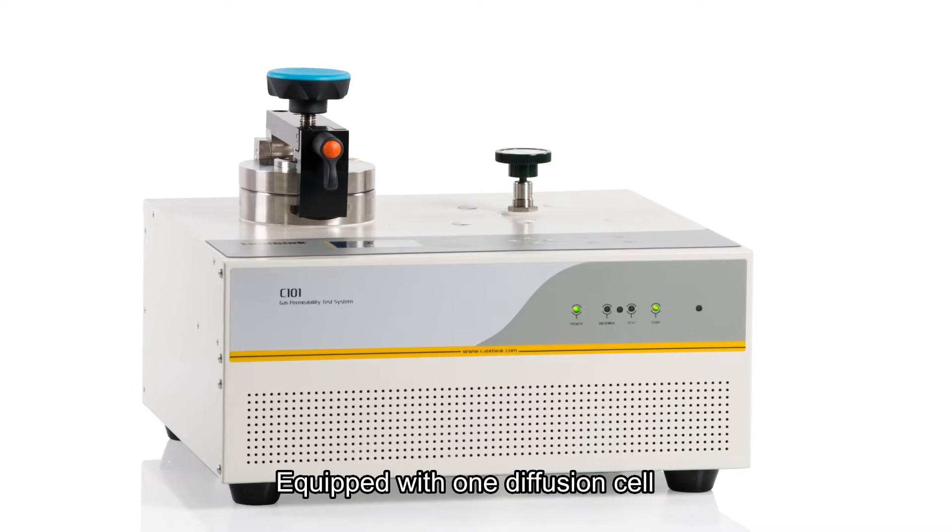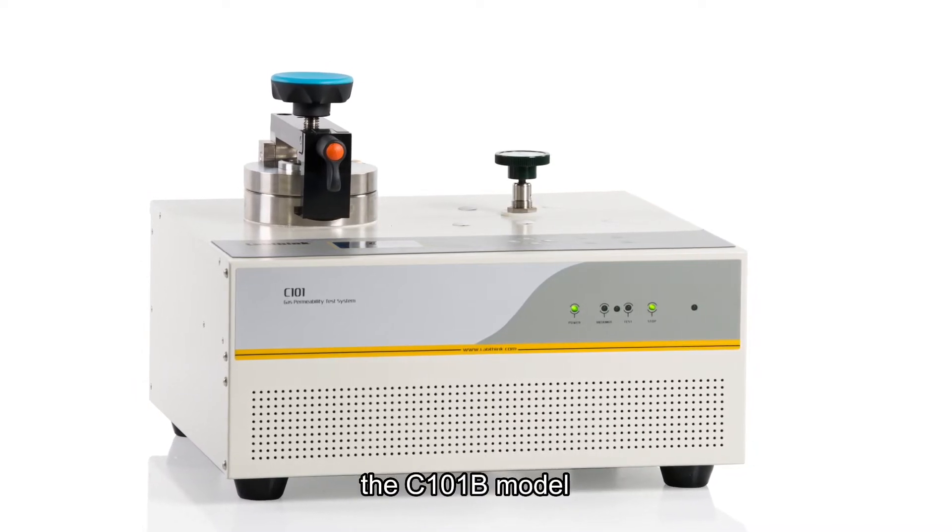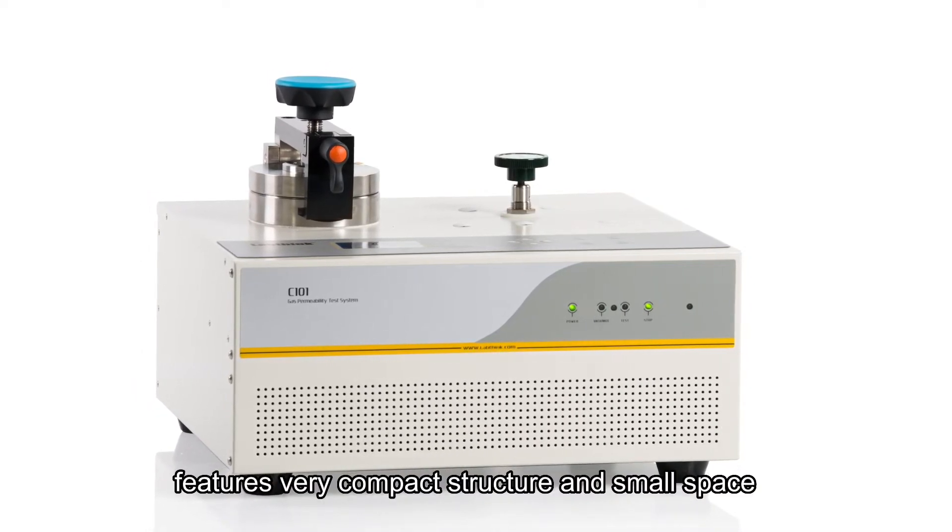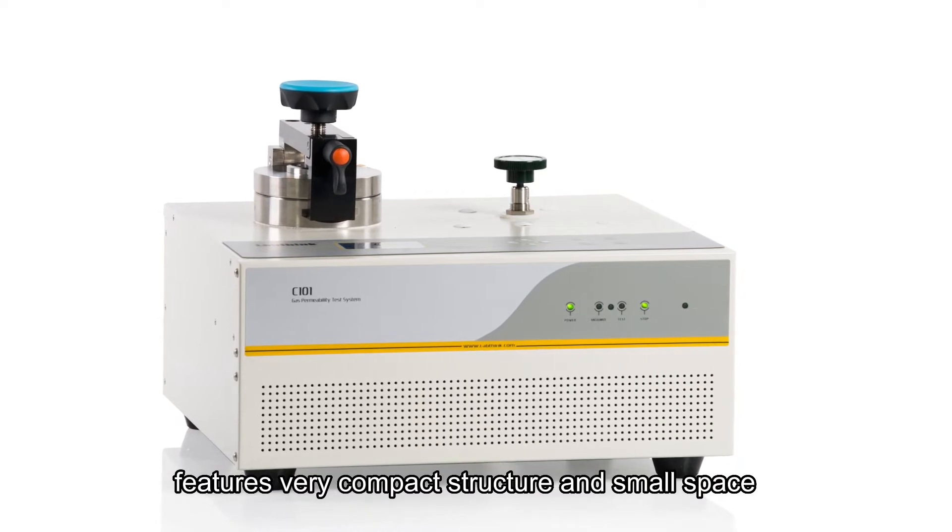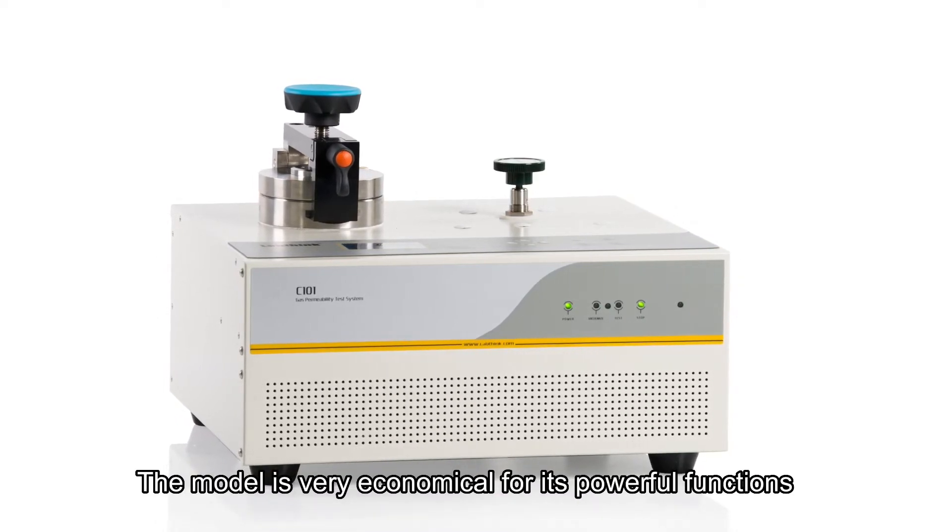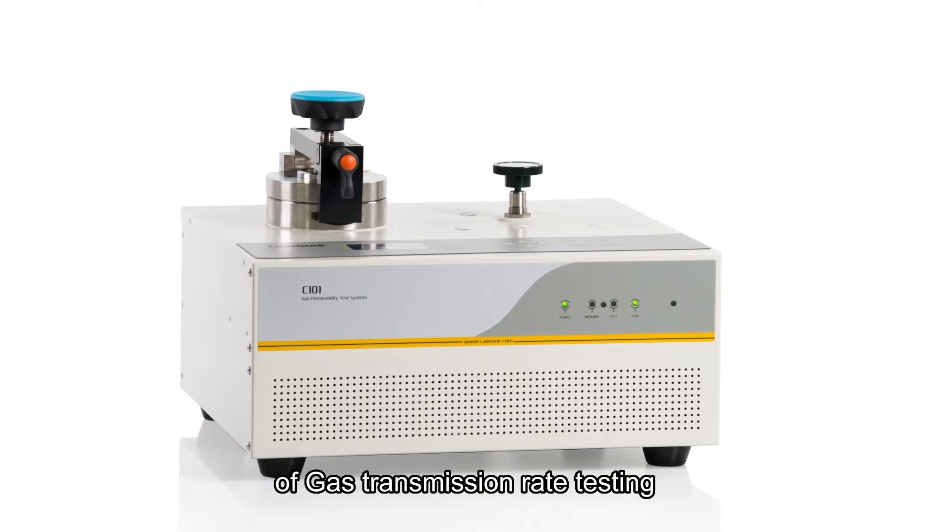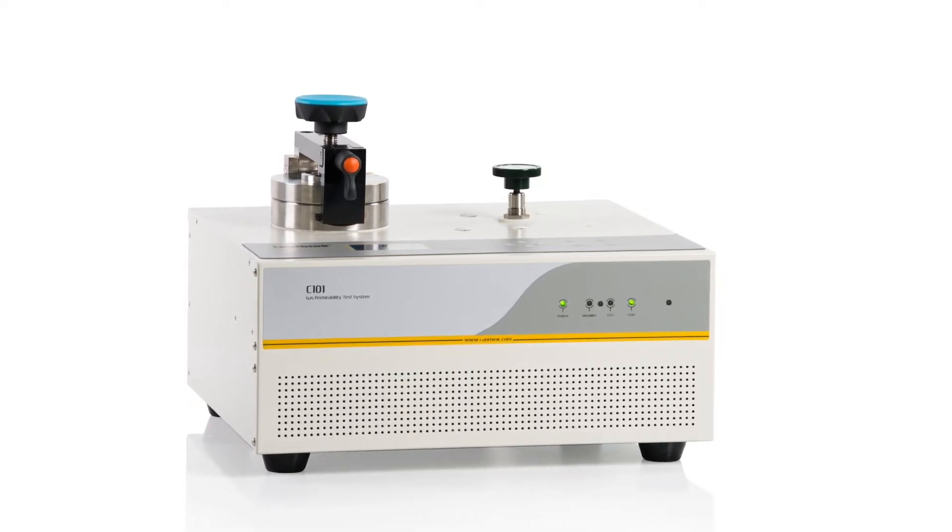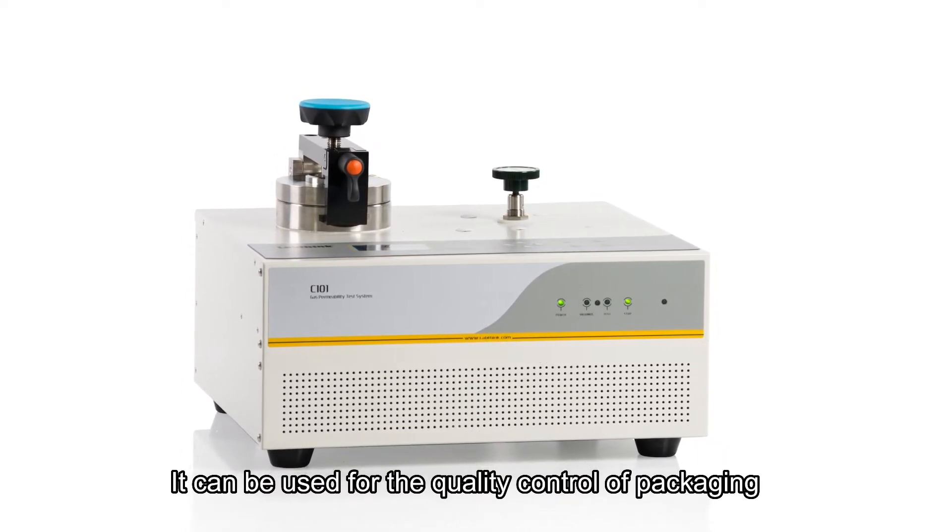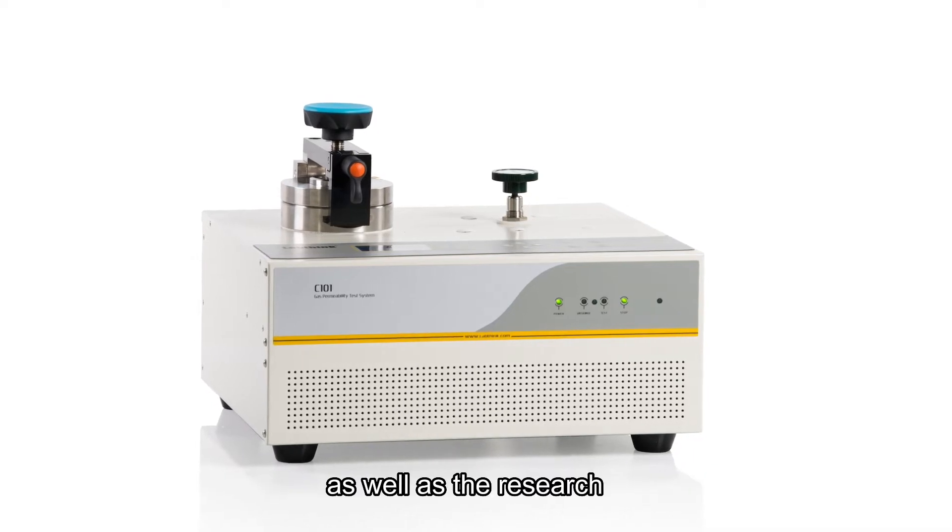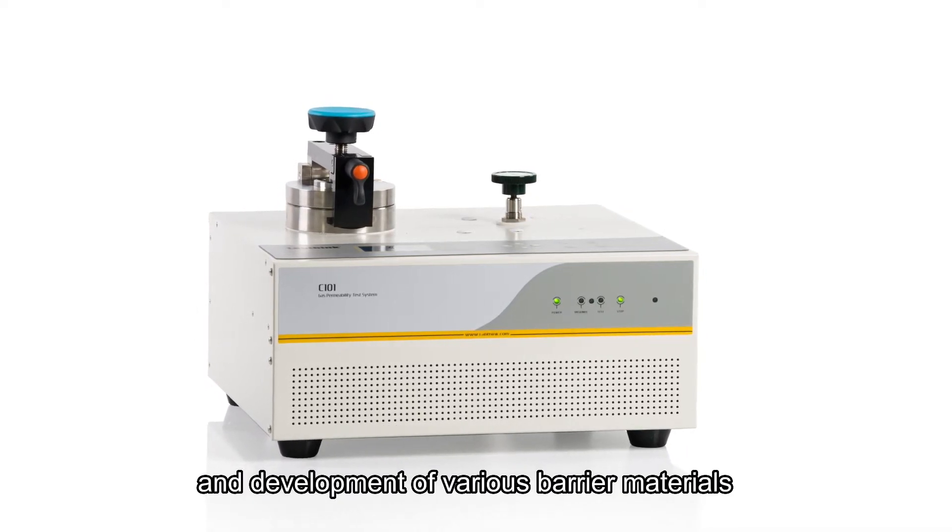Equipped with one diffusion cell, the C101B model features very compact structure and small space. The model is very economical for its powerful functions of gas transmission rate testing. It can be used for the quality control of packaging, as well as the research and development of various barrier materials.